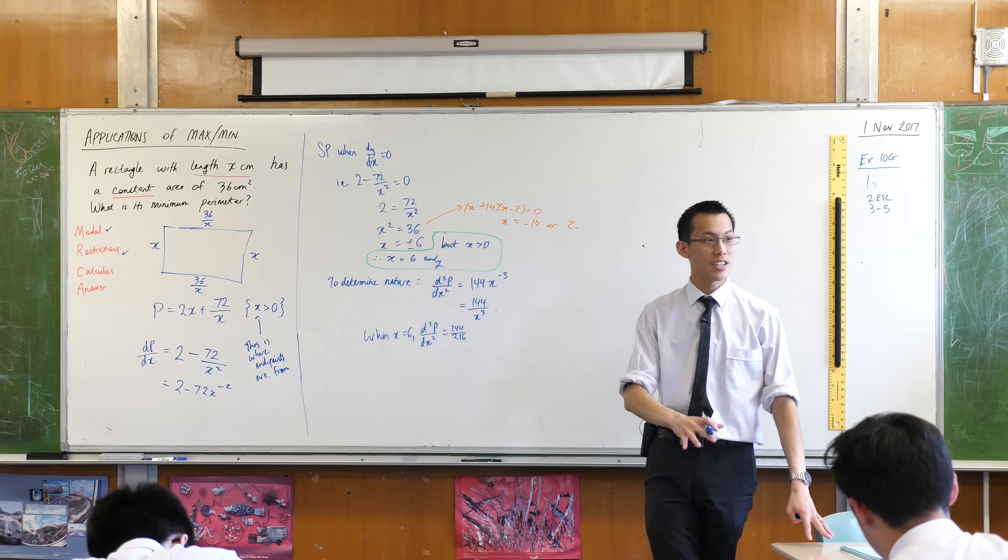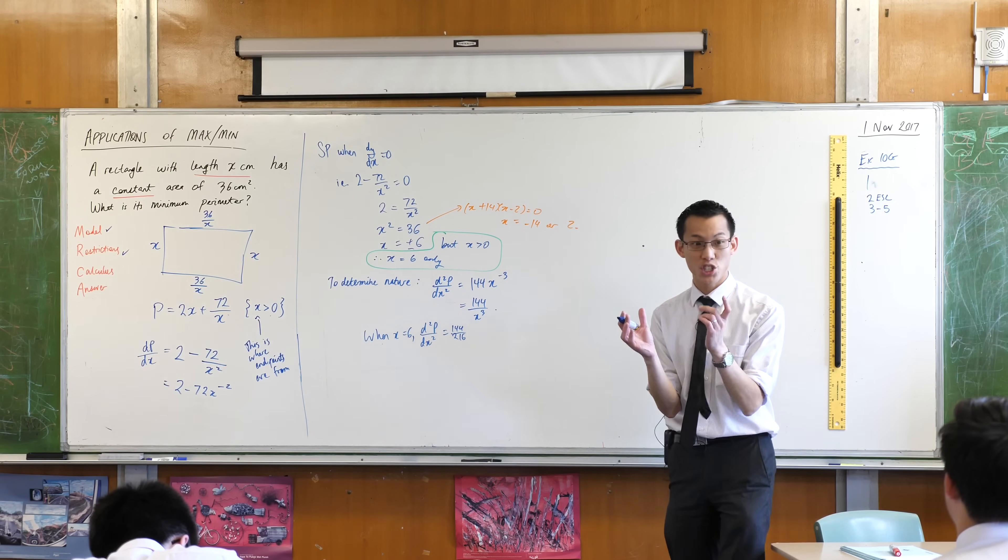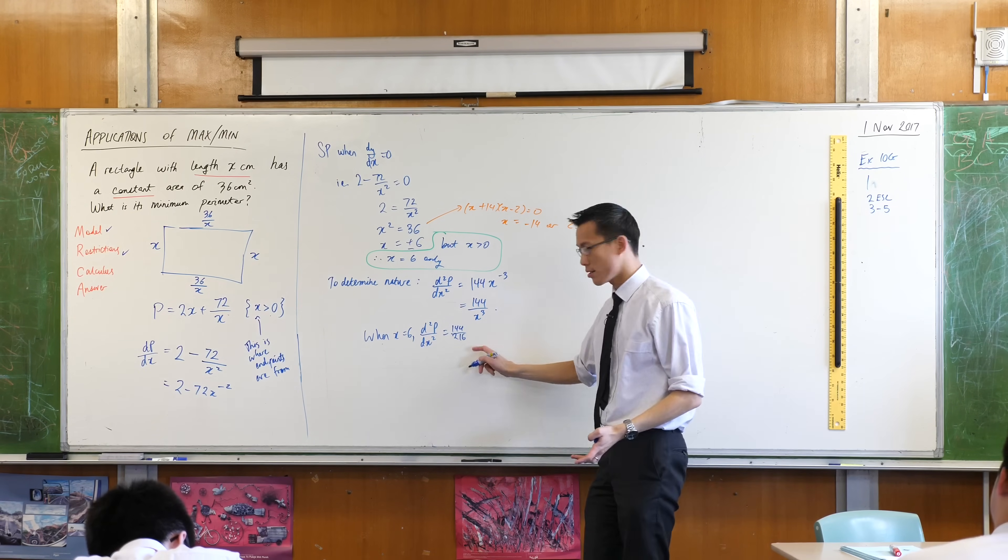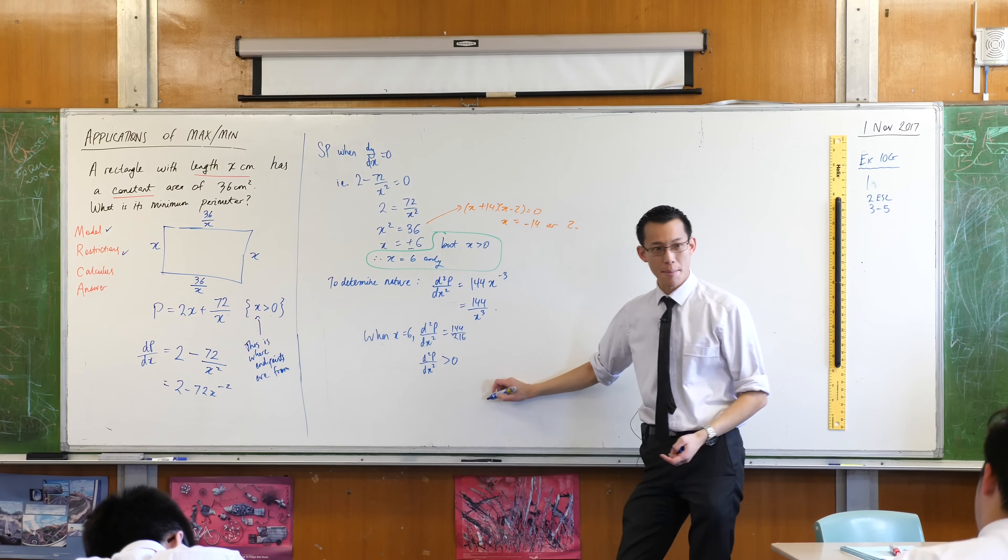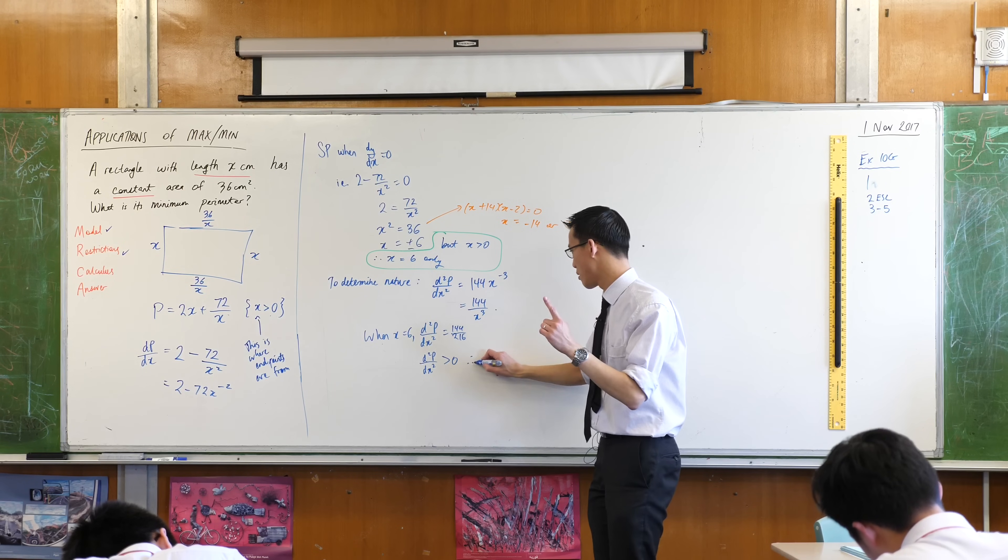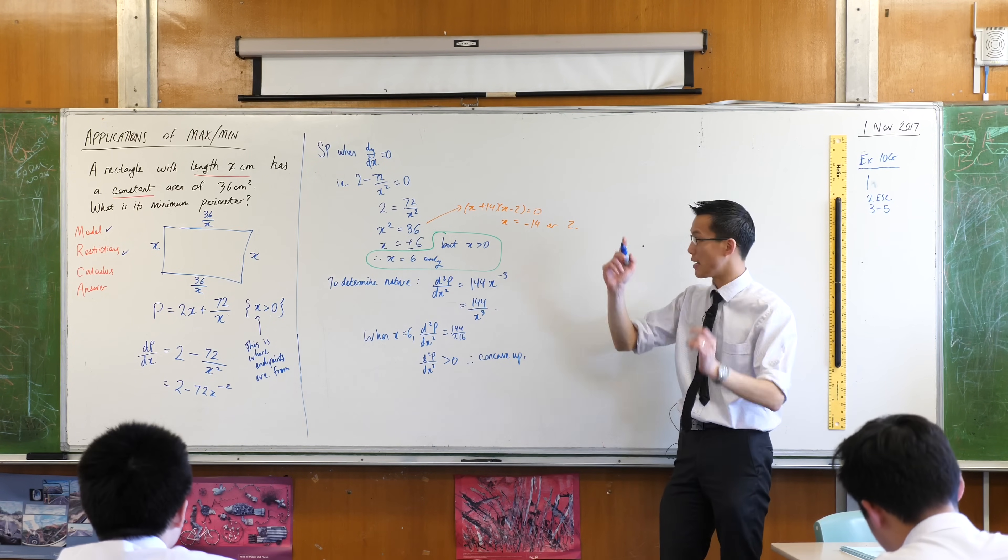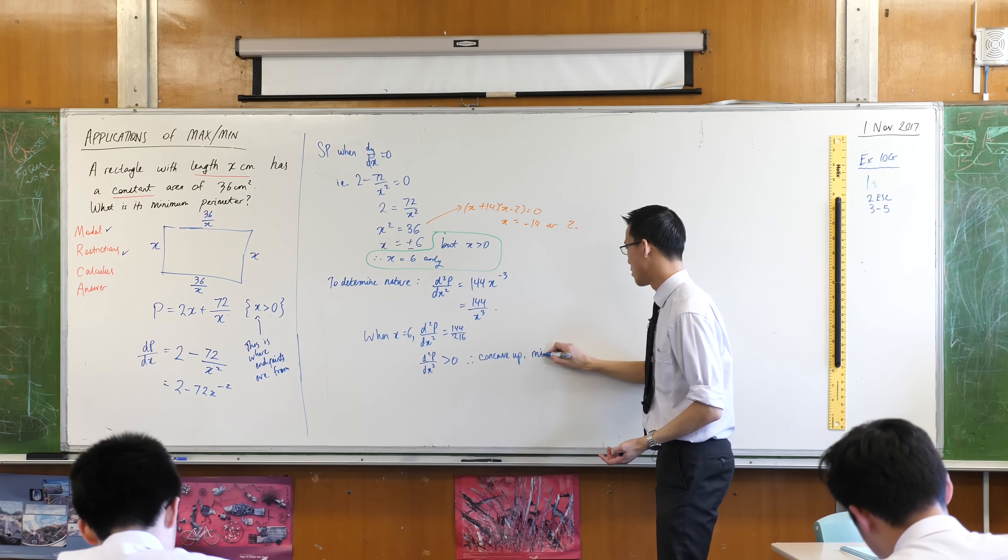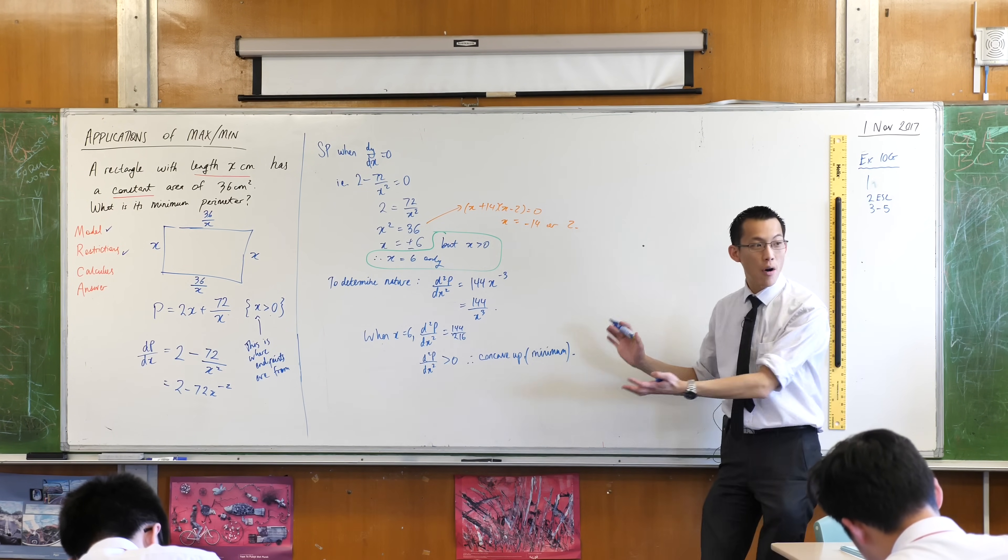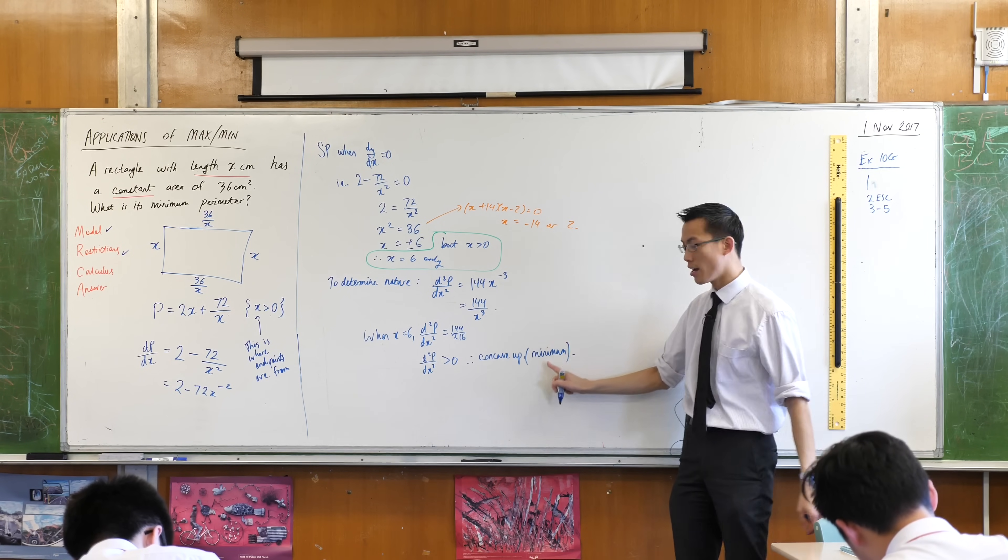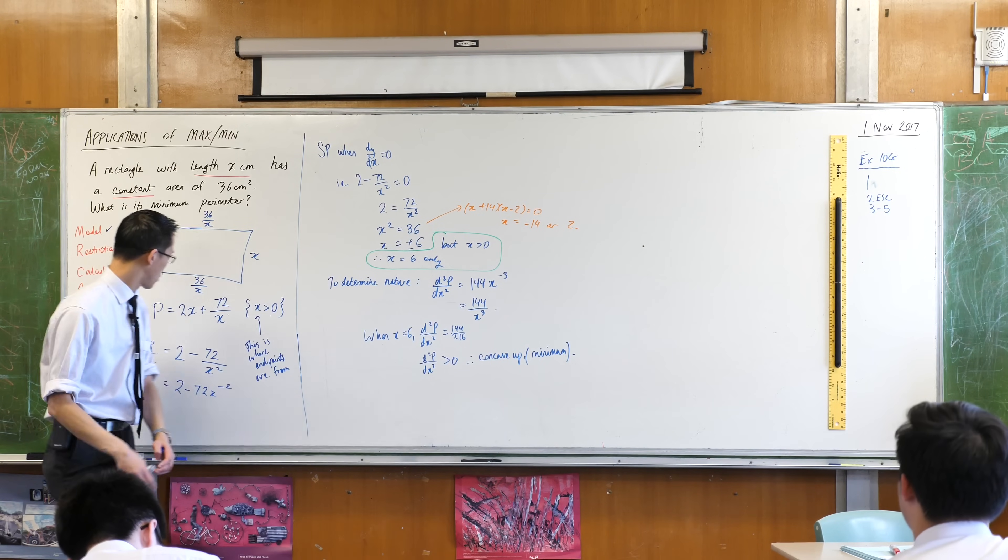So when x equals 6, the second derivative is 144 on 216. Now I could simplify that, but I don't need to. I have a number. All I'm interested in is not the size, but the sign. I'm just looking at positive or negative. So this d squared p on dx squared is greater than 0. That means it's concave up, which is a relief because concave up means a minimum, which is what we're searching for. So now I have established it's not just a stationary point. It's a turning point and it's a minimum turning point. Now I'm done with my calculus.